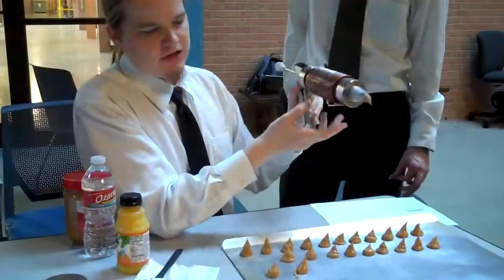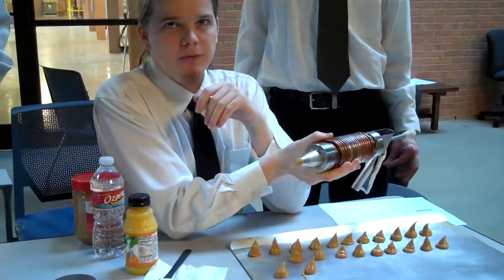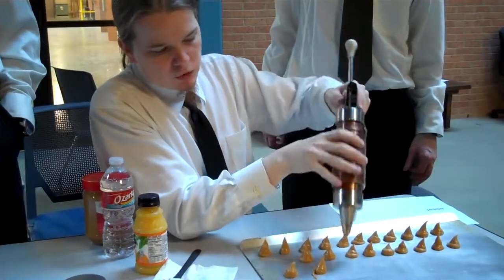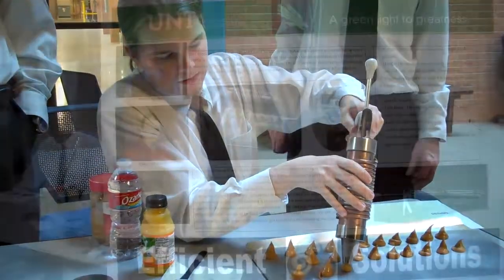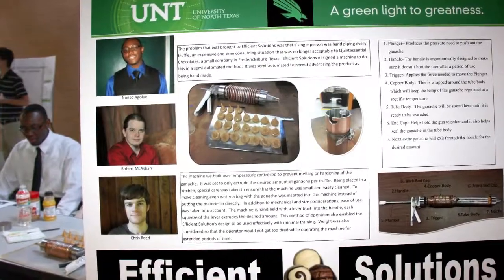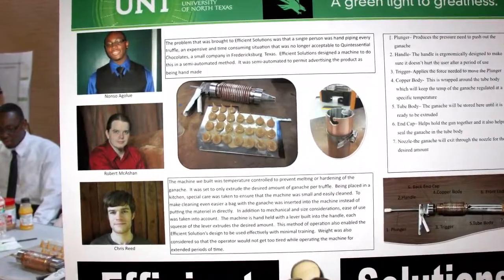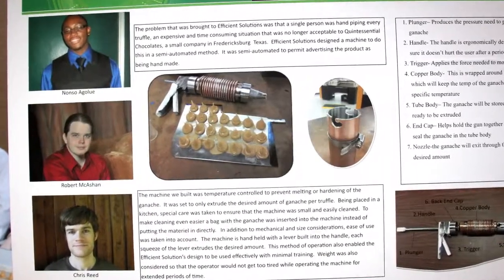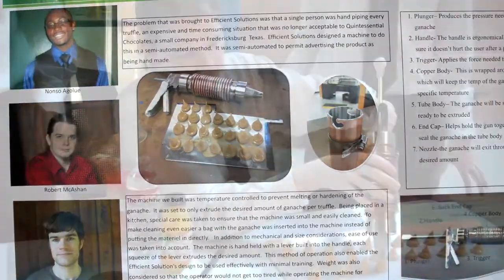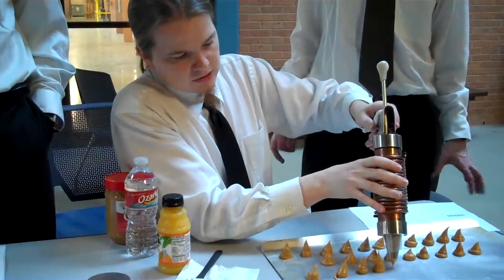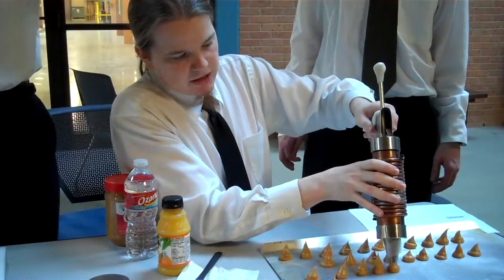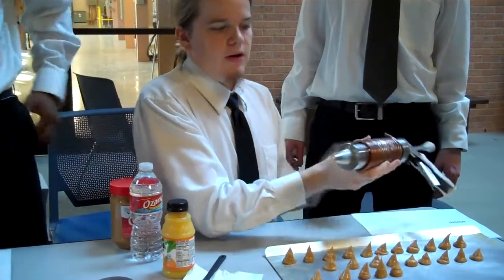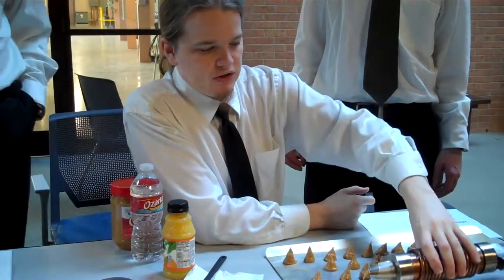The project is quite simple. A chocolate company in Fredericksburg had a problem — they needed to extrude more truffles. Their truffle business was exploding, but they were currently hand piping every single one of their truffles. That was causing strain on the single person trained to hand pipe them, and production wasn't fast enough. So she asked us to come up with a semi-automated solution — a faster, easier way to actually extrude the truffles.